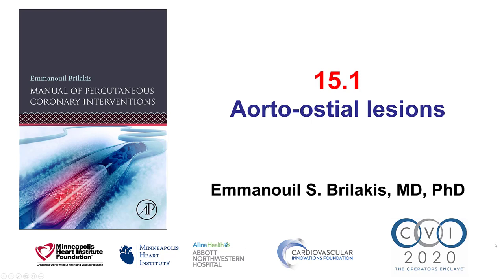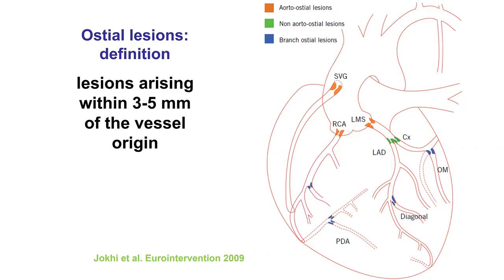Hi, this is Manos Brilakis from the Minneapolis Heart Institute and the Cardiovascular Innovations Foundation, presenting Section 15.1 of the Manual of PCI on how to treat aorto-osteal lesions. There are two types of osteal lesions: the aorto-osteals — left main, right coronary, a saphenous vein graft, or an internal mammary or arterial graft — and there are also the branch osteal lesions, which are further down in the coronary tree. In this video, we'll talk about the aorto-osteal lesions.